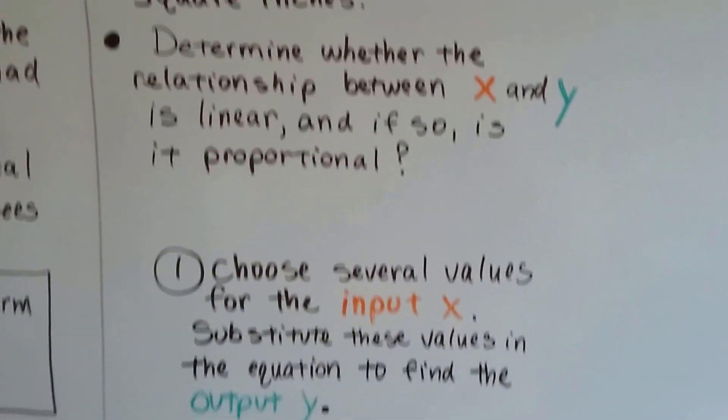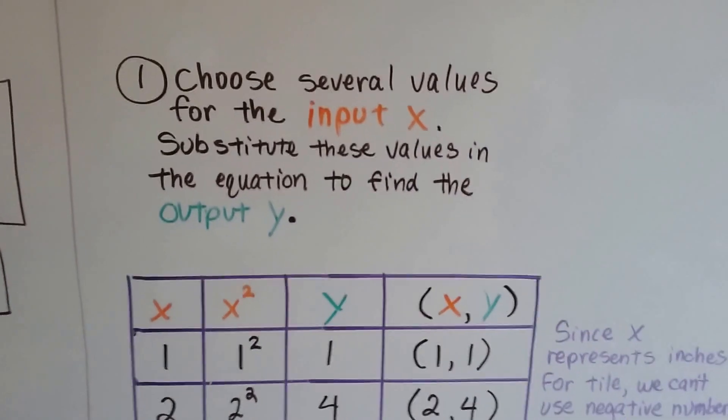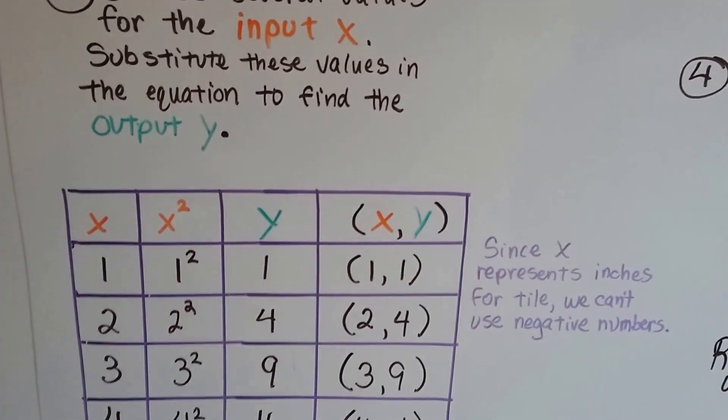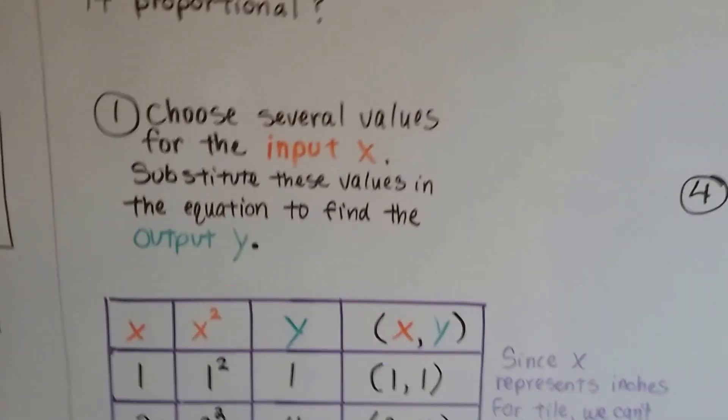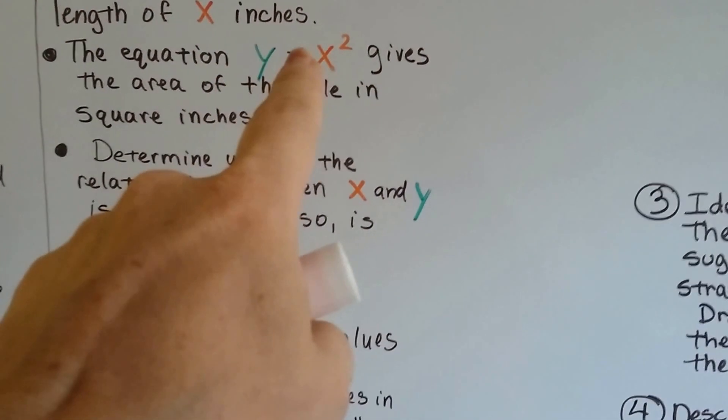So the first thing we do is choose several values for the input x, and we substitute these values in the equation to find the output y. So our equation is, remember, y equals x squared?